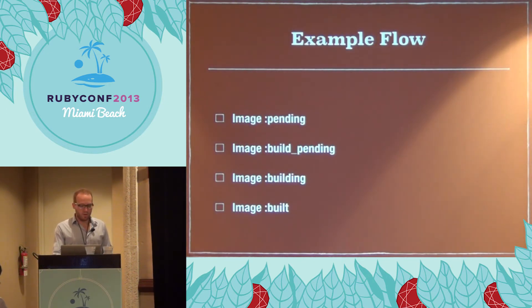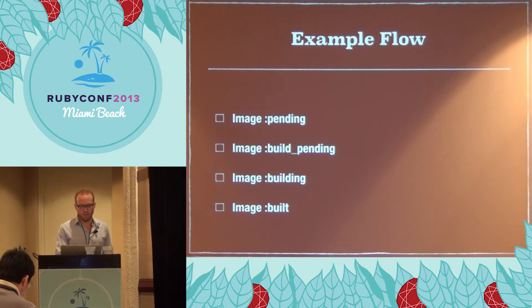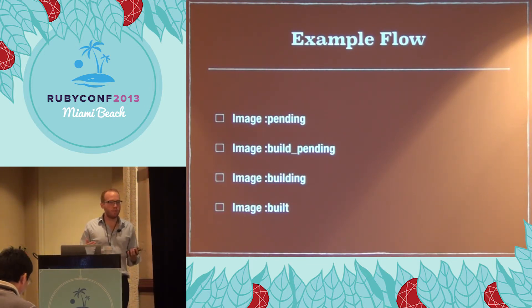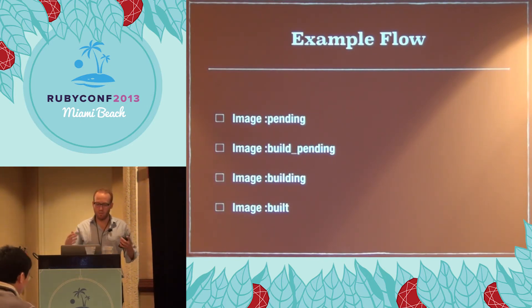An example flow for images: we start in pending, we set up our image on AWS, we go into build pending, we install Ruby, we do everything to set up the image — that's the building state. Then when it's built, we make sure it's registered properly. This framework lets us think in terms of state machines, which is really valuable — think about all your operations things as resources that have states going through state transitions as you deploy.